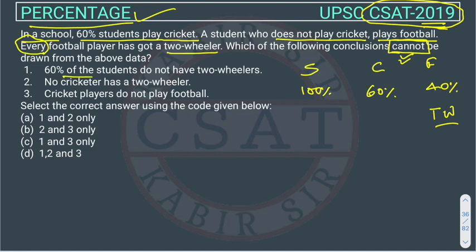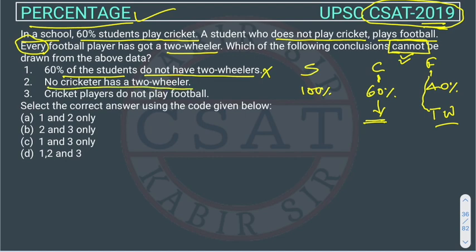Conclusion 1: 60% of the students do not have a two-wheeler. The question mentions that football players have two-wheelers, but it is not mentioned whether cricket players have two-wheelers or not. So we cannot comment on this — this conclusion is wrong.